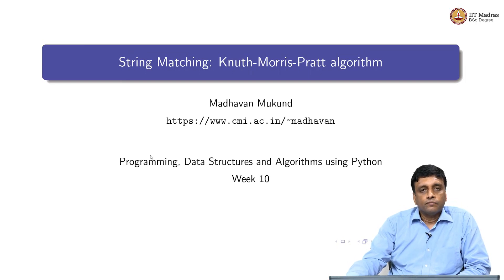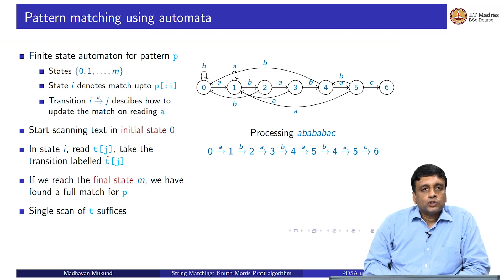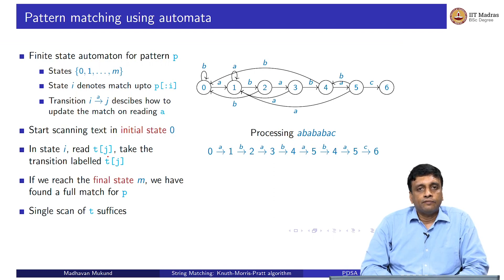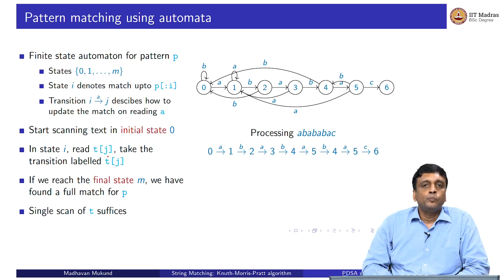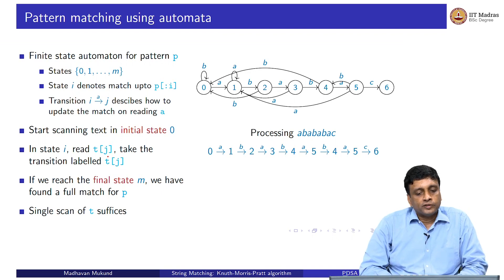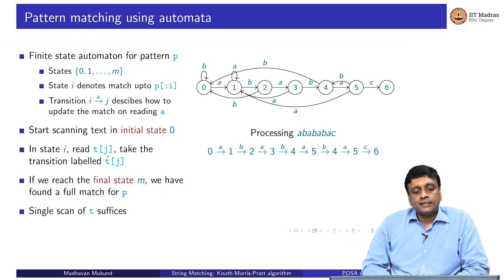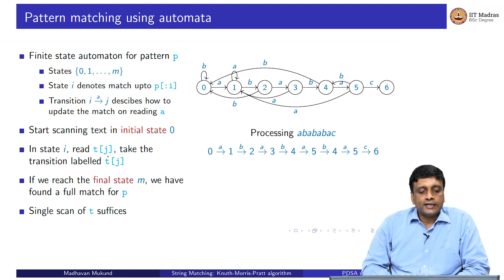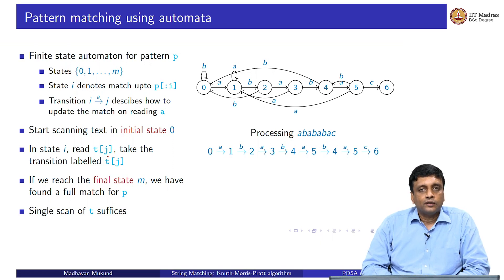We will now look at the Knuth-Morris-Pratt algorithm for string matching. What we said last time was that if we can pre-process our string into an automaton which remembers the longest prefix match at every stage, then if I have a prefix match up to a particular letter and I read a letter, the state i denotes the match up to p of i. With a single scan of our text, we can find the pattern.